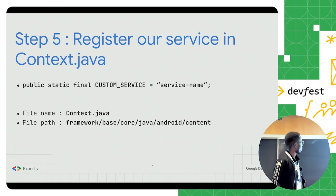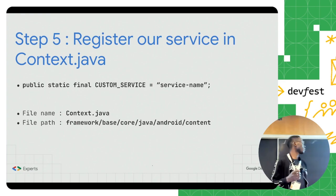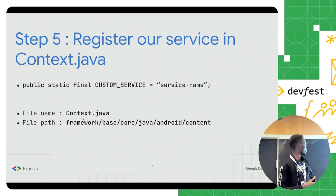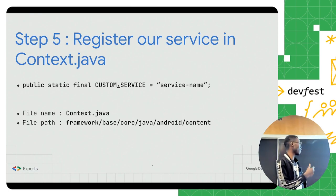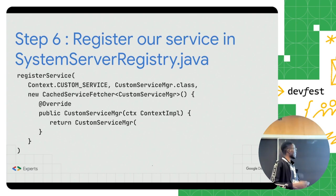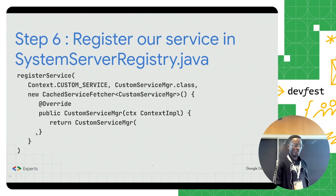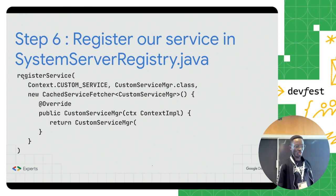Step five: we need to register our service into the context. When accessing a particular service in Android, you use the service's name — and that name is defined in the Context class. So we open the Context.java file and add a constant value for our service name. Then we can use that constant name when fetching that particular service. The next step is to register our service into what we call the system service register, where we define the link between the manager and the actual service.